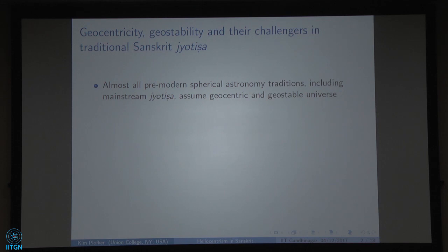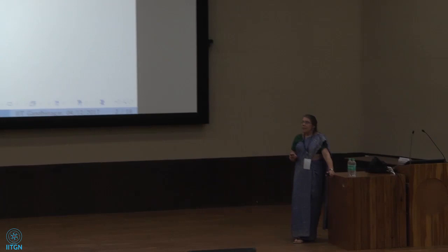It is a truism, very well known, that the majority of pre-modern astronomy involved a cosmology that was geocentric and geostable. Where the earth was considered to be a sphere for the purposes of scientific theories, it was taken to be at the center and non-rotating. This is the case for pretty much everywhere in classical astronomy where this model prevailed. This, of course, as we have just heard from Professor Devakaran, was not universally held.